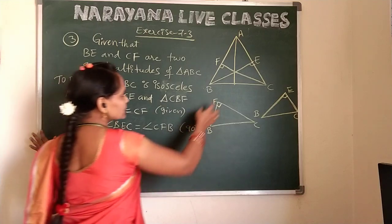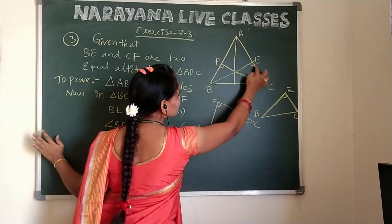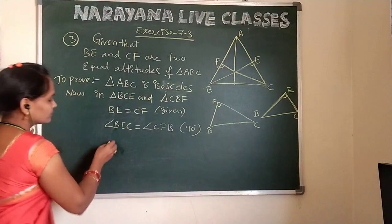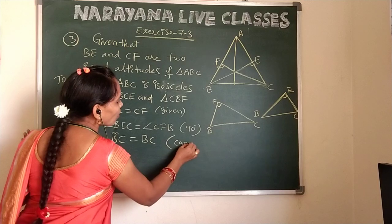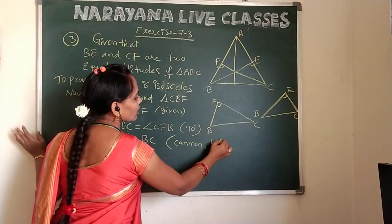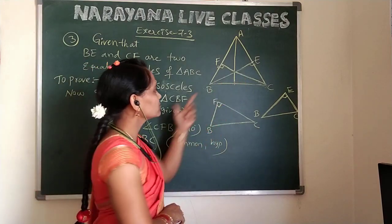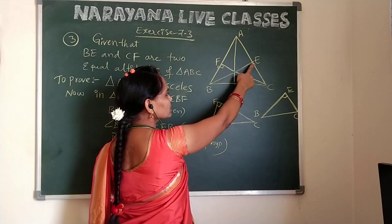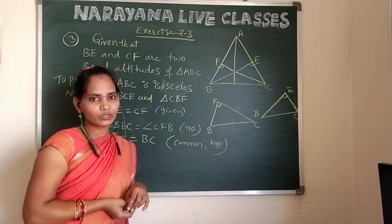In these two triangles, BC is common. So BC is equal to BC — this is the common hypotenuse. We call BC the hypotenuse because this side is opposite to the right angle. The side which is opposite to the right angle is called the hypotenuse.